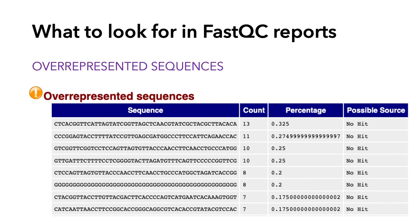Over-represented sequences can be produced by highly expressed transcripts and may trigger a warning in this module. But it's also where things like contaminants and primer sequences can show up, so you're going to want to check any unknown sequences against BLAST. The last column in the module identifies possible sources — sometimes it'll say things like universal Illumina primer or adapter sequence. If it says no hit, you'll have to figure out what it is and make sure it's nothing problematic.